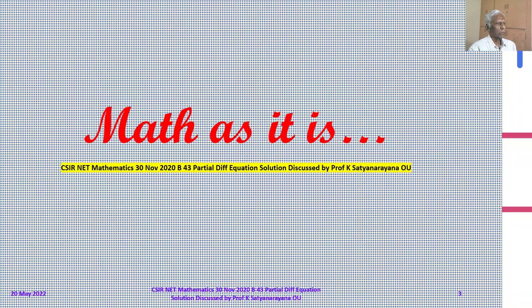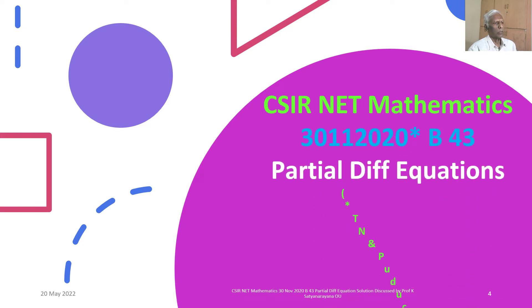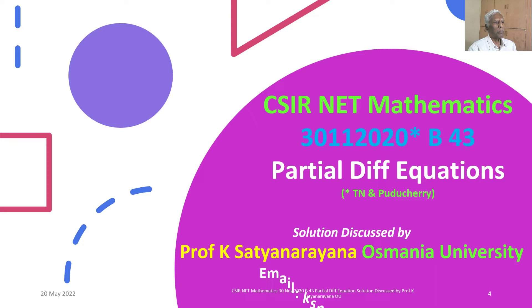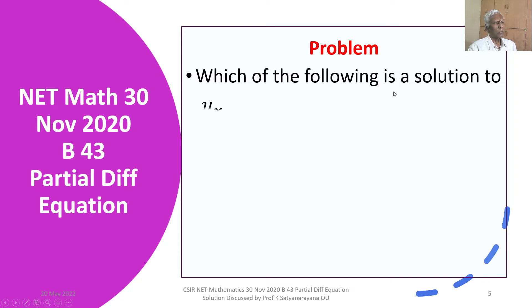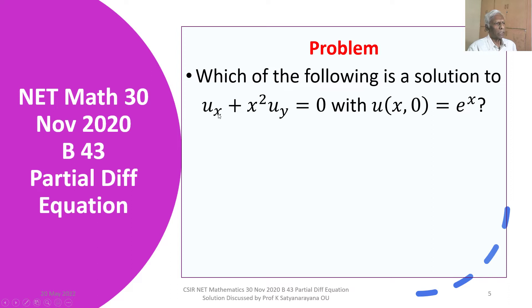We now discuss the solution of a problem from the section Partial Differential Equations. The problem is on Lagrange's first-order Quasilinear Partial Differential Equation. This question appeared in the CSIR National Eligibility Test held on 30th November 2020, Section B. The problem asks: which of the following is a solution to u_x + x² u_y = 0 with u(x, 0) = e^x?